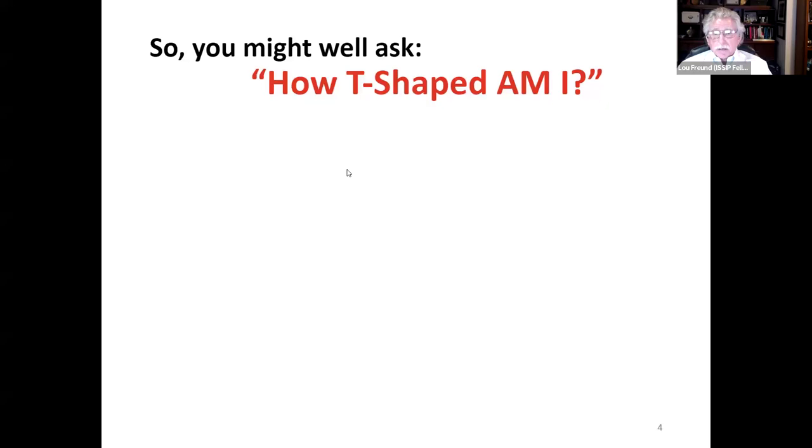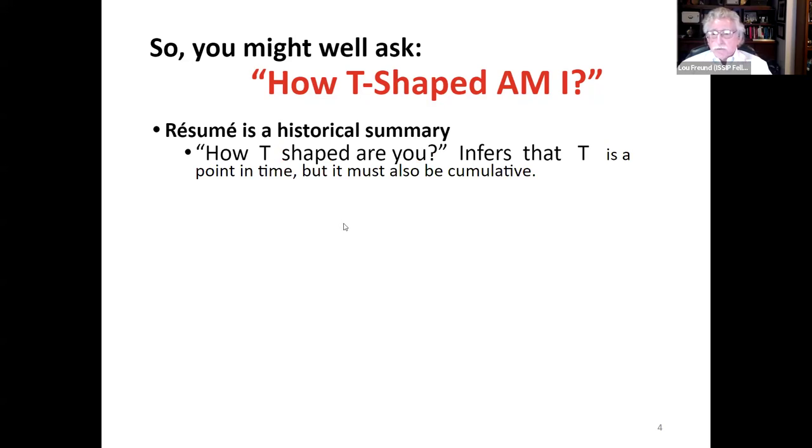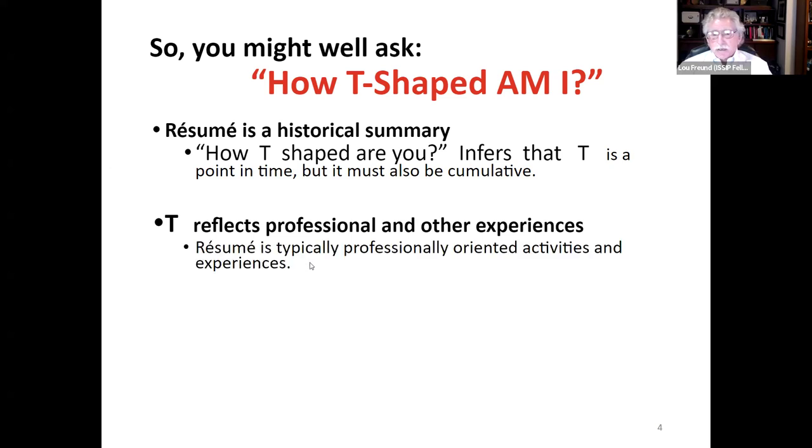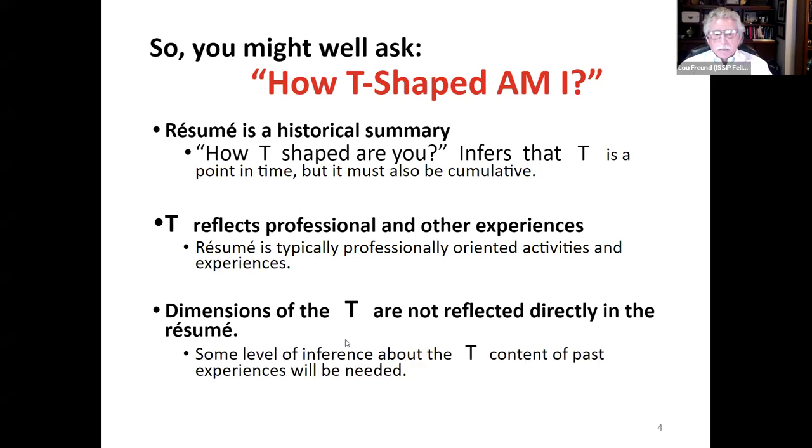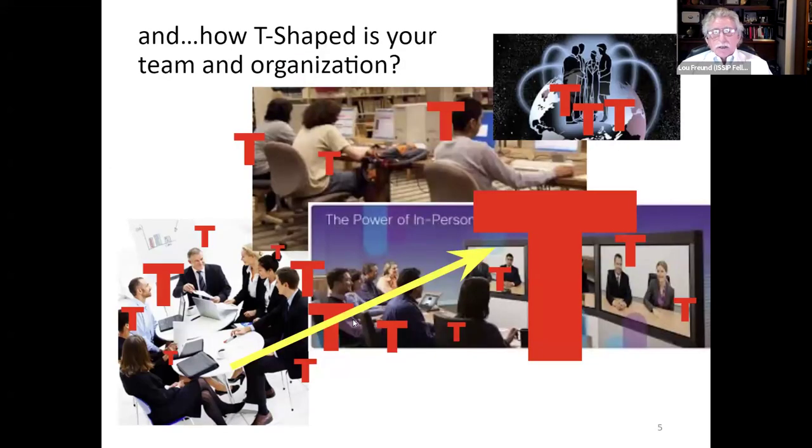But the question we want to ask ourselves is, how T-shaped am I? A resume is just a historical summary. How T-shaped are you infers that the T is a point in time, but it also has to be cumulative. The T reflects professional and other experiences, while a resume is typically professionally oriented, reflecting activities and experience. The dimensions of the T are not reflected directly in the resume. Some level of inference about the T content of past experiences will be needed. In addition, if one person is T-shaped and we consider many people to be T-shaped, then there's the idea that teams of people also have T-shapes, that there are evidences of breadth and depth in team T-shapes, which is comprised of the individuals on the team.